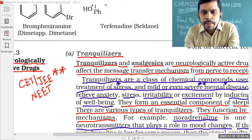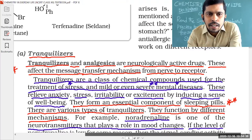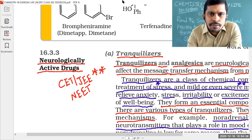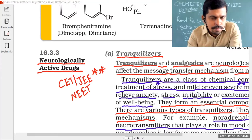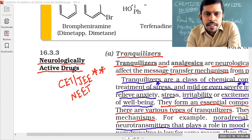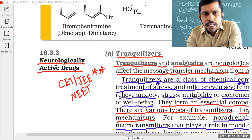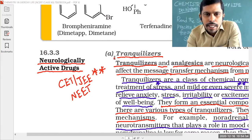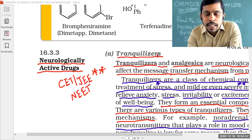What are meant by tranquilizers? Tranquilizers are a class of neurologically active drugs. That means these drugs are affecting the nervous system, which is why they are called neurologically active drugs. Tranquilizers are one category of neurologically active drugs.